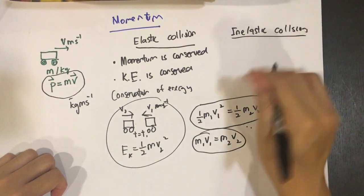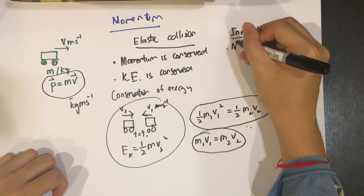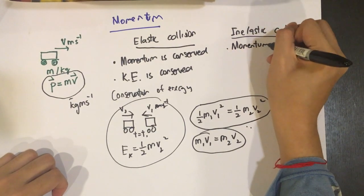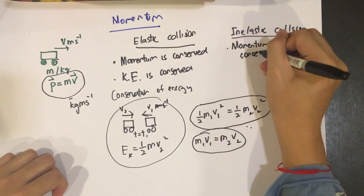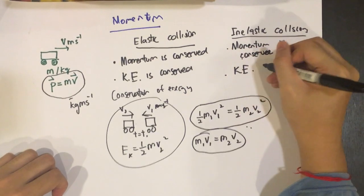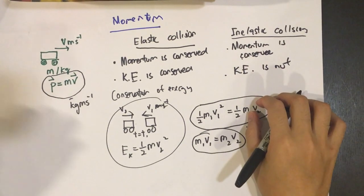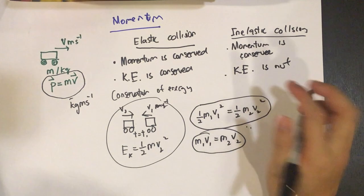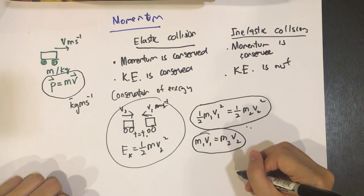This will work for inelastic collisions as well, because momentum is conserved. Momentum is conserved. But kinetic energy is not. Kinetic energy is not conserved. Because in this case, when they do collide.